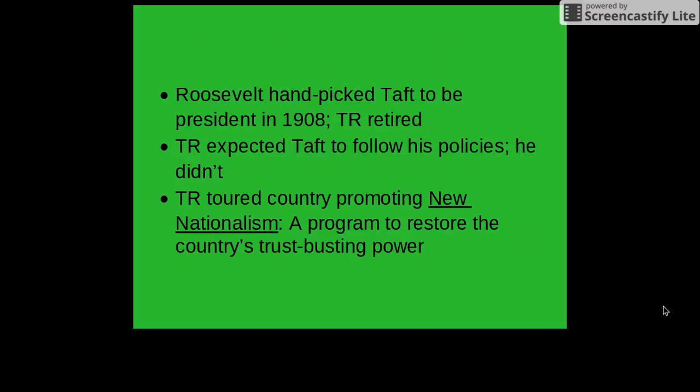When Roosevelt left office, he essentially handpicked William Taft to be president in 1908. Roosevelt had expected Taft to follow his policies; however, Taft as president did not. Teddy Roosevelt then began touring the nation promoting what he called New Nationalism, which was his new program to restore the government's trust-busting power. He said Taft had betrayed him and the public, and he would correct the wrongs that had been done during the Taft administration.